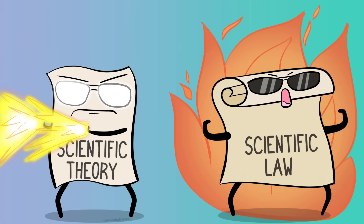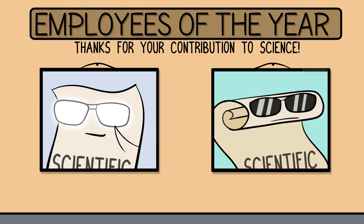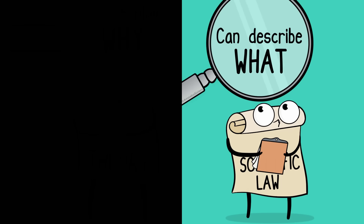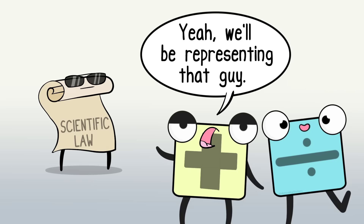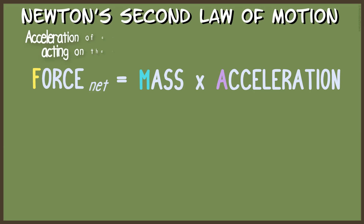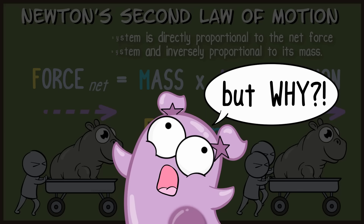They can't, because they're completely different things. One is not more powerful than the other. The word law might sound more fancy, but it's not. They truly are just different things, but they are both very important in science. Scientific laws tend to describe a natural phenomenon, whereas a scientific theory can provide a scientific explanation for it. Many scientific laws are even represented mathematically. For example, Newton's second law of motion shows how acceleration is related to the force and mass of an object. It can be written mathematically, but as a law, it tends to describe, not explain why.